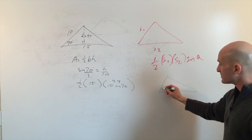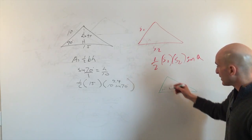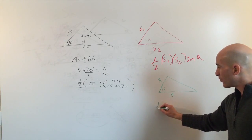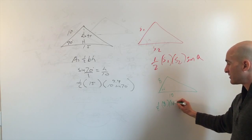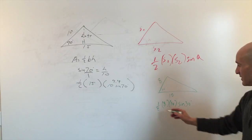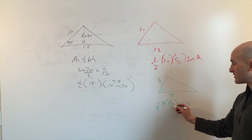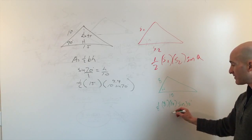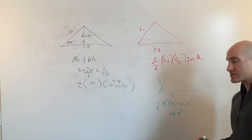Quick example: say the included angle is 30 degrees, and the two sides are 8 and 10. Area equals one half times 8 times 10 times sine of 30. That's one half times 80 times one half, which equals 20 square units.